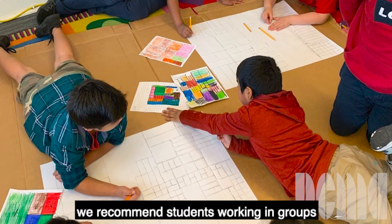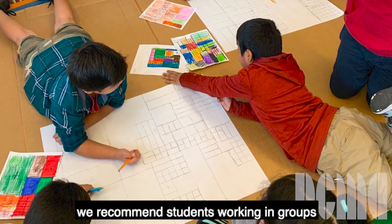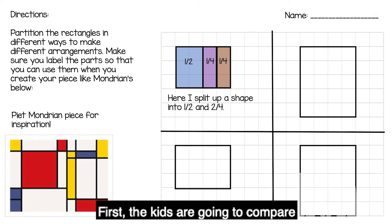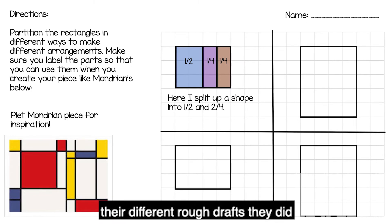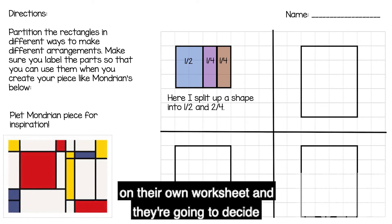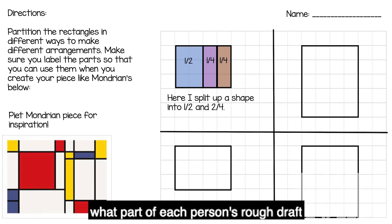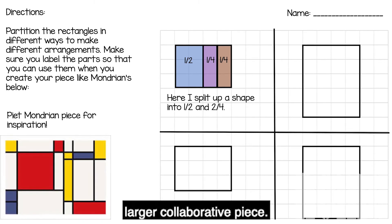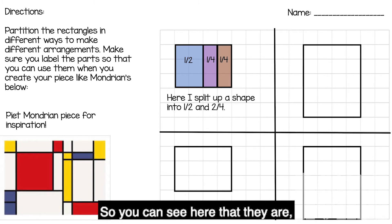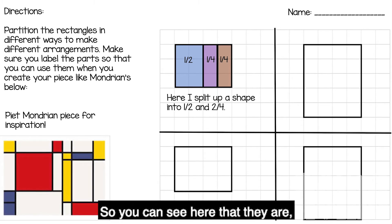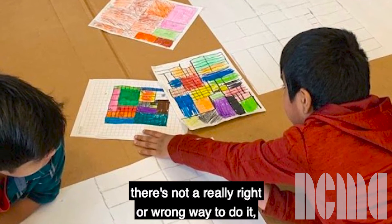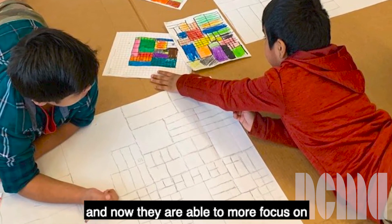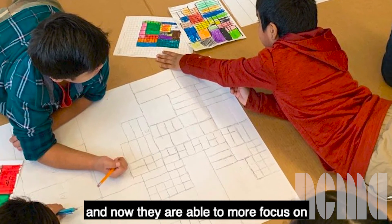We recommend students working in groups of three to five. First the kids are going to compare their different rough drafts they did on their own worksheet and they're going to decide what part of each person's rough draft they want to include on their larger collaborative piece. So you can see here that there's not a really right or wrong way to do it. This is a time where they just interacted with a lot of the mathematical concepts and now they are able to more focus on drawing their pieces neatly, choosing their color palette.